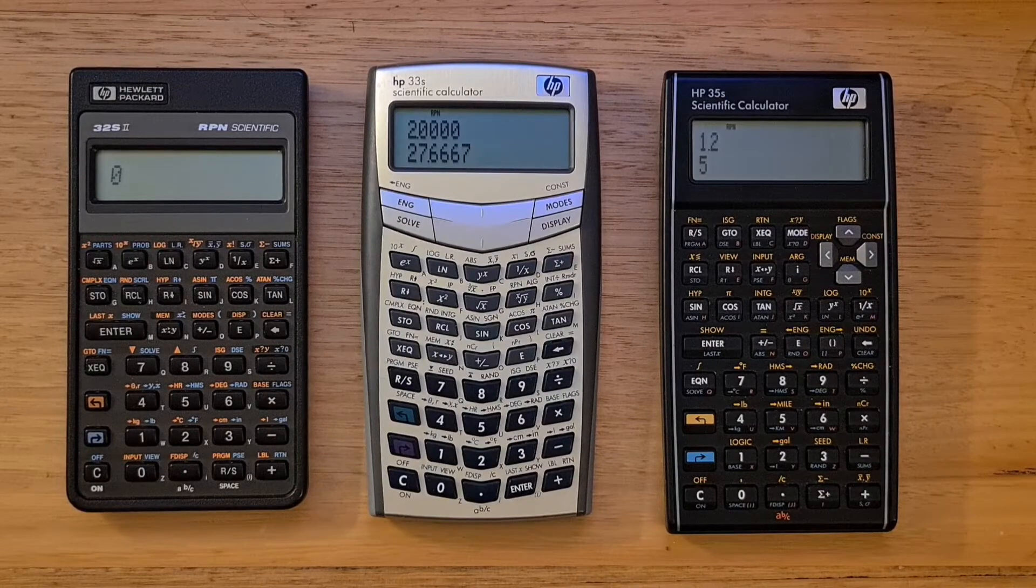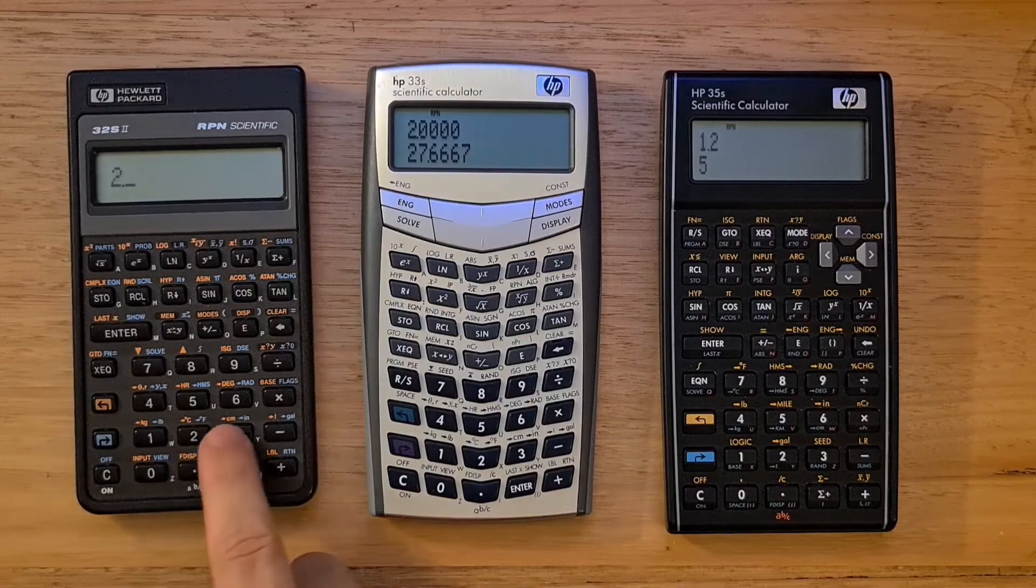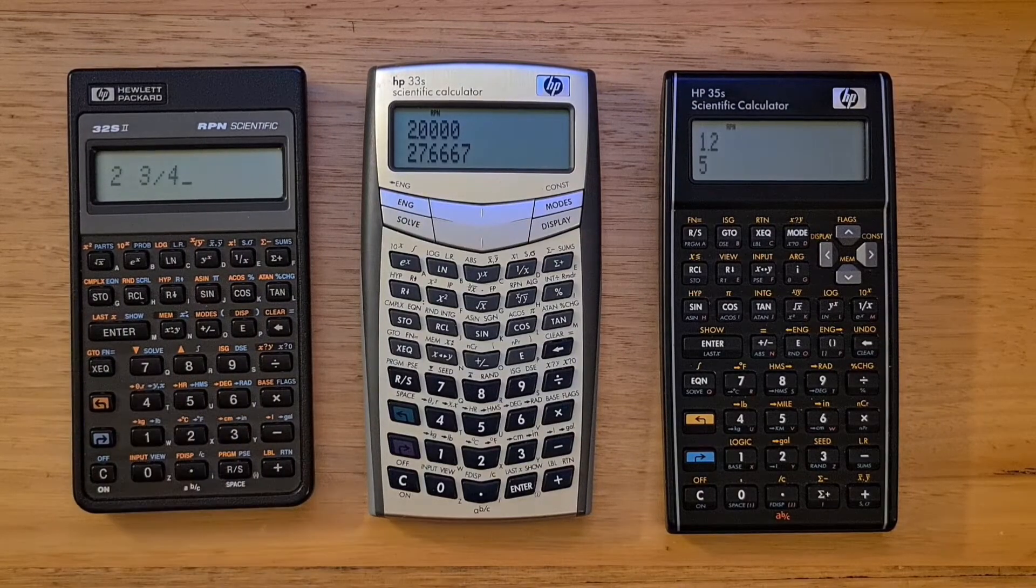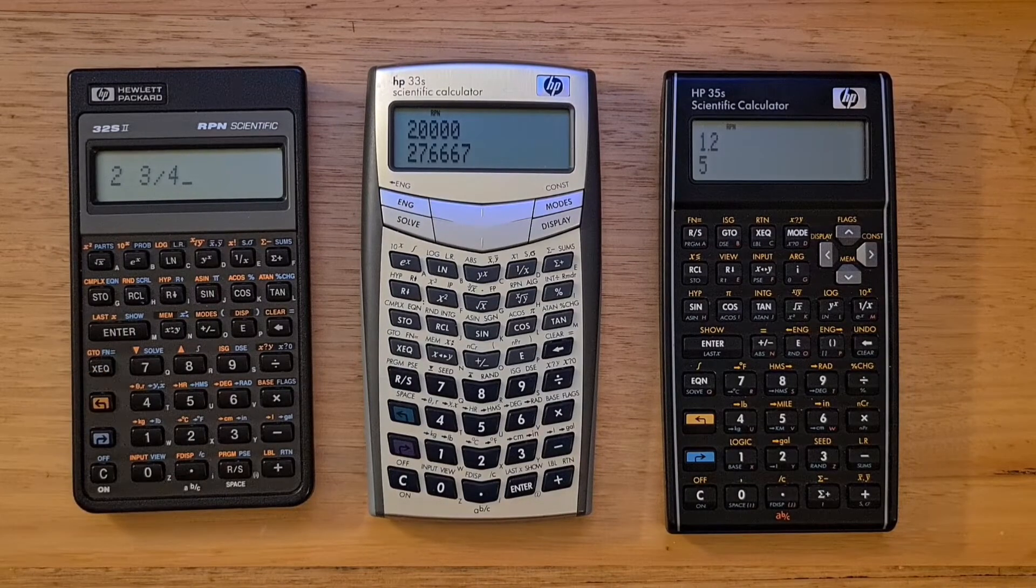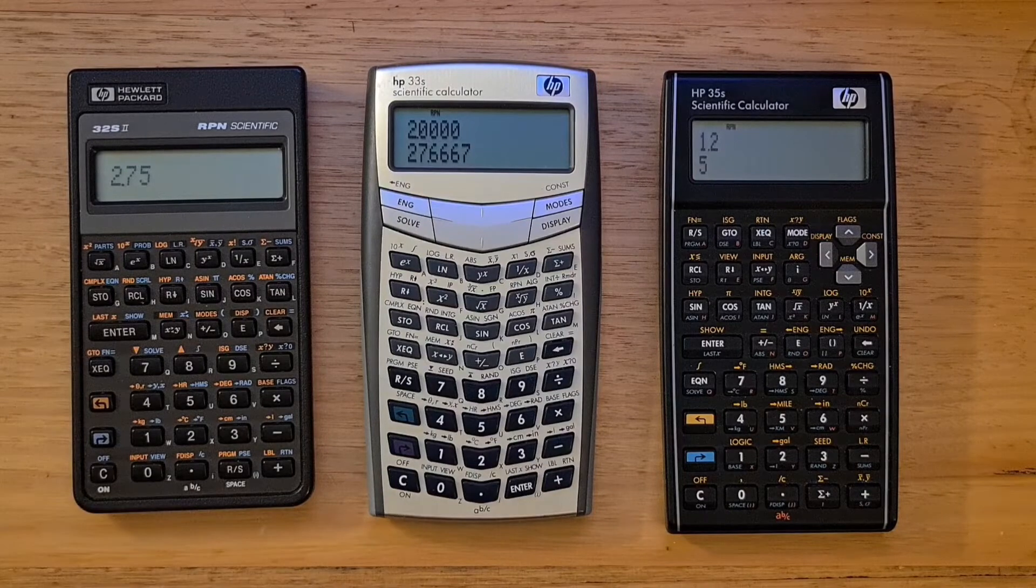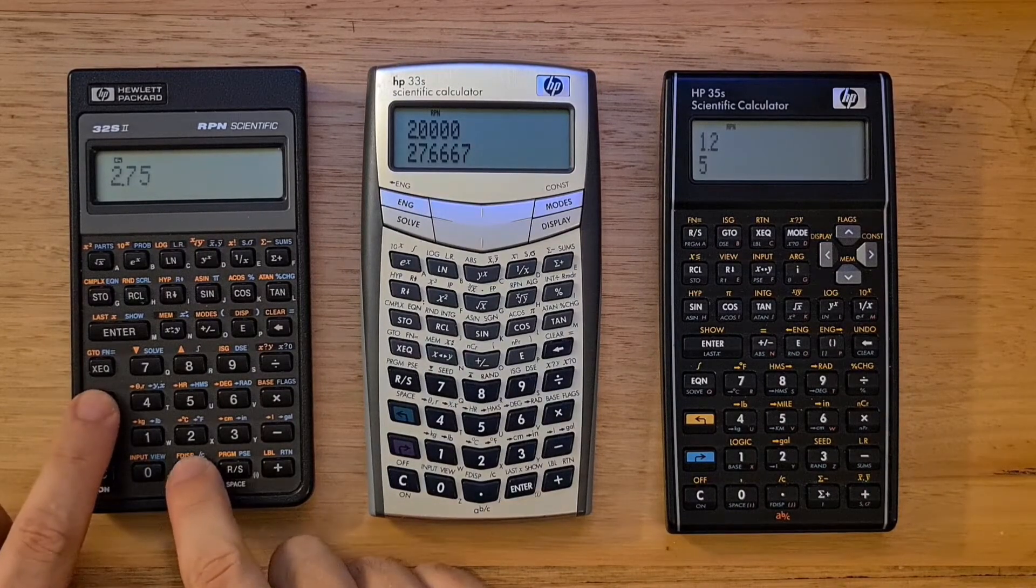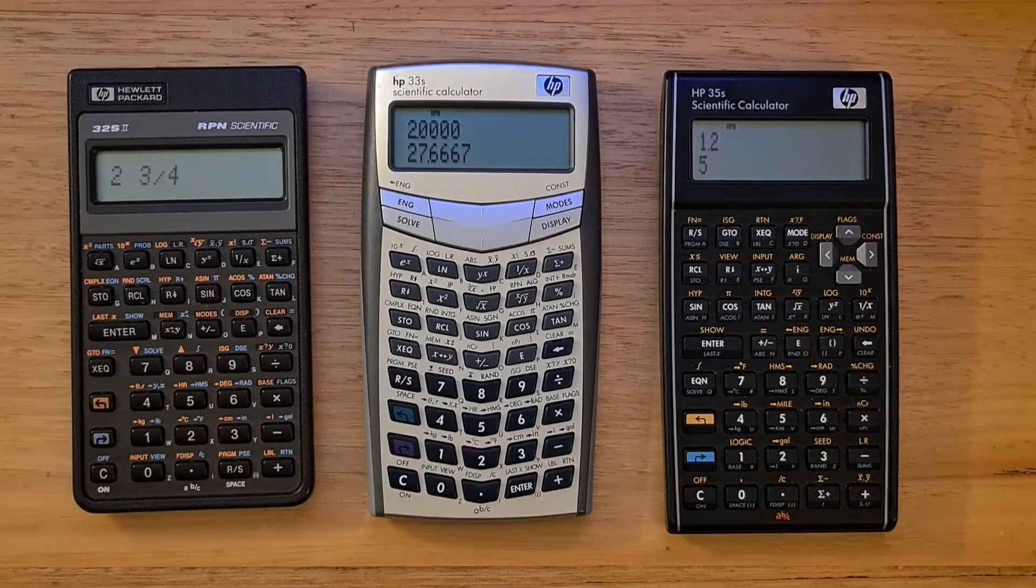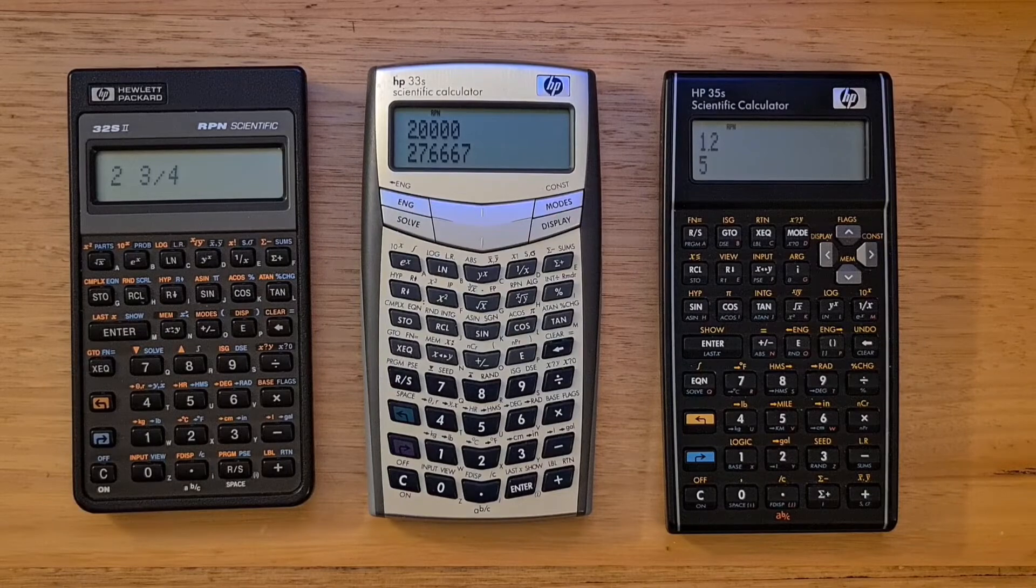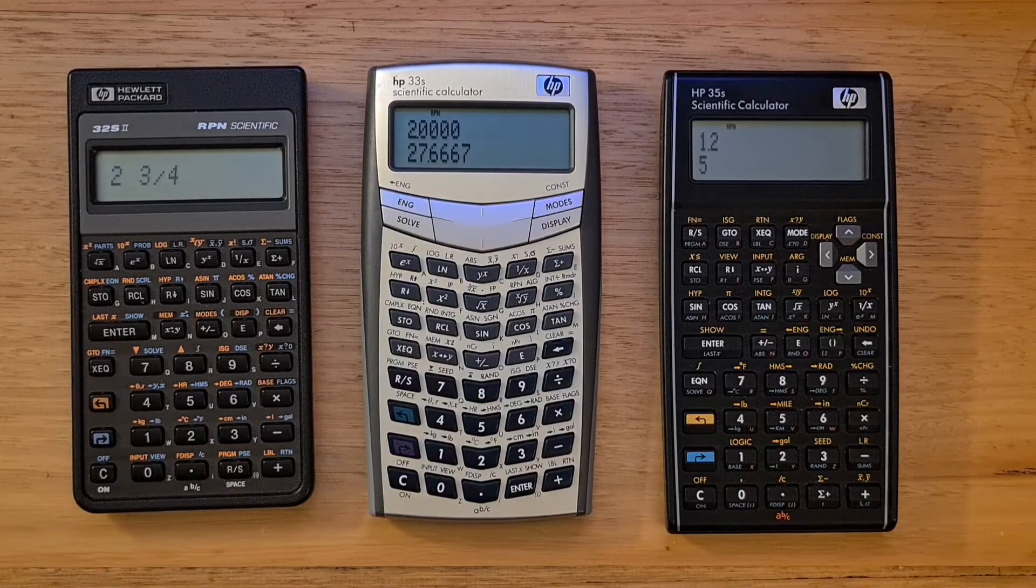To enter two and three quarters, I would type two dot three dot four. Now if we hit the enter key, this will get converted to decimal. But we can toggle fraction display with the right shift and the decimal point key.